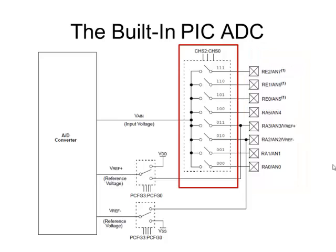There's something inside the A-to-D converter called a control register. There are a couple of control or configuration registers that tell us how this ADC is being used and its configuration. There are three bits called the channel select bits. These three bits tell you which channel you're looking at. For analog input 0, you write 0,0,0 to those bits; for analog input 7, you write 1,1,1. We'll look at that whole register in a couple of minutes.